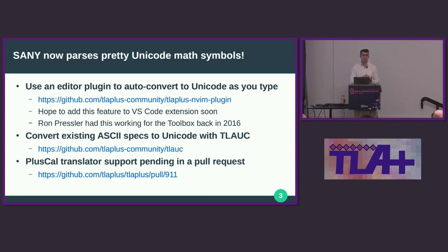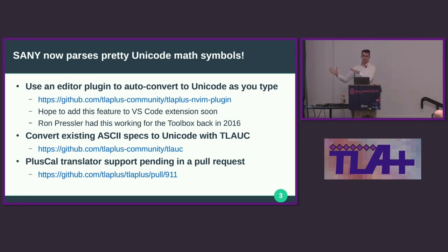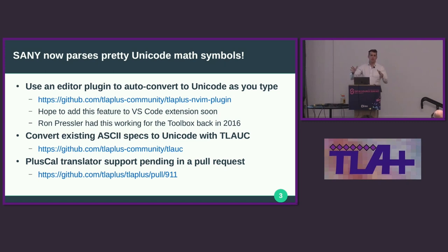I hope to add this feature to the VS Code extension soon. Ron Pressler had this working for the Toolbox back in 2016 — I think it got taken out because it broke some stuff, but maybe we could raise it from the dead if we wanted to add it to the Toolbox. I also wrote a tool called TLOC — TLA Unicode Converter — which can convert your existing ASCII specs into their Unicode equivalents. It's a nice command-line tool. The PlusCal translator support is pending in a pull request — it's failing a test right now so I need to fix it a tiny bit more, but it's out there and published, so if I get hit by a bus tomorrow, someone else can probably finish it.